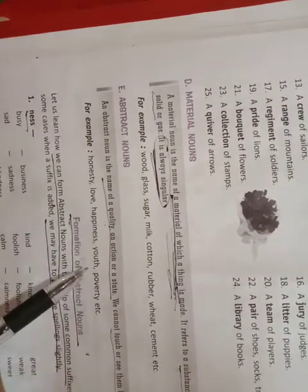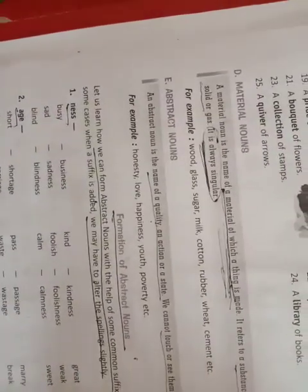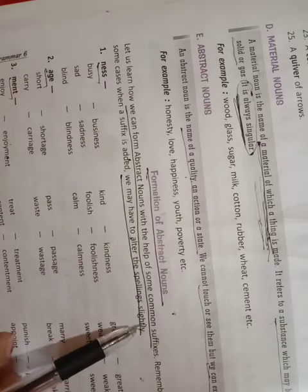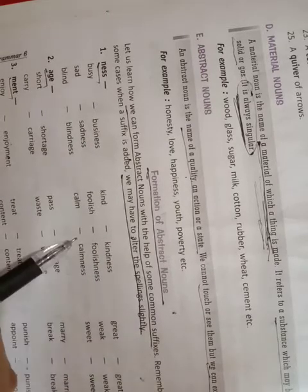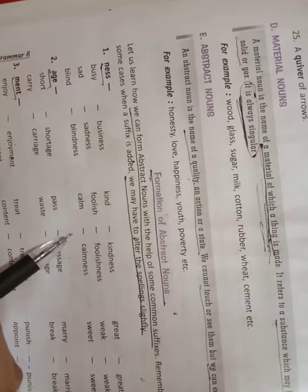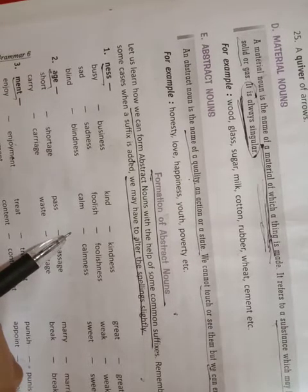An abstract noun is the name for a quality, an action, or a state. We cannot touch or see abstract nouns, but we can experience them. You can form abstract nouns using common suffixes — you add a few letters to a word and in this way you frame an abstract noun.